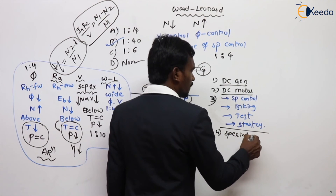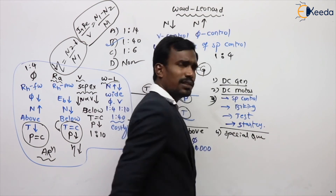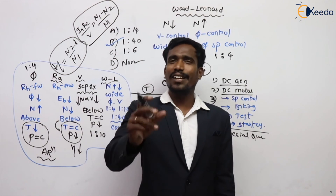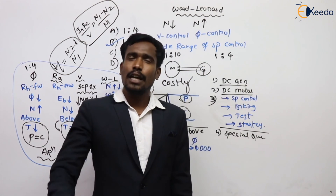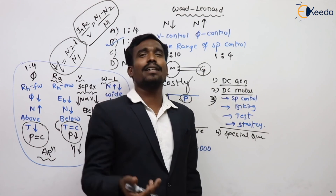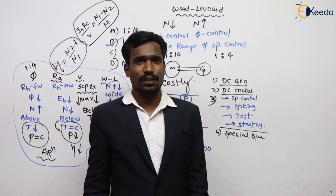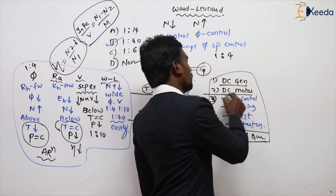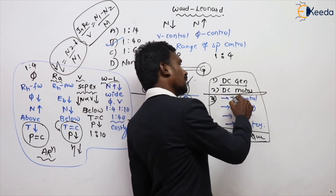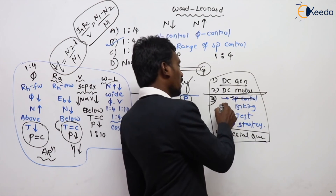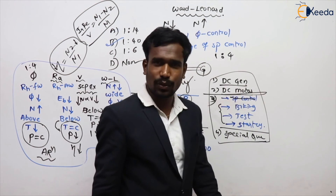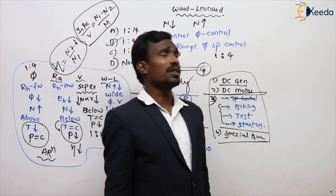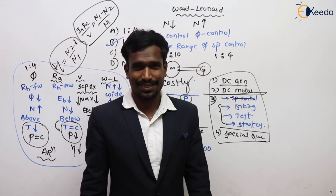Special questions include: if field winding is open-circuited, if armature winding is short-circuited, if prime mover is disconnected, if prime mover is reversed, if magnetic field is reversed, if residual magnetism is reversed. We have now completed the two major parts, and in the third part, we have completed speed control methods. Thank you.